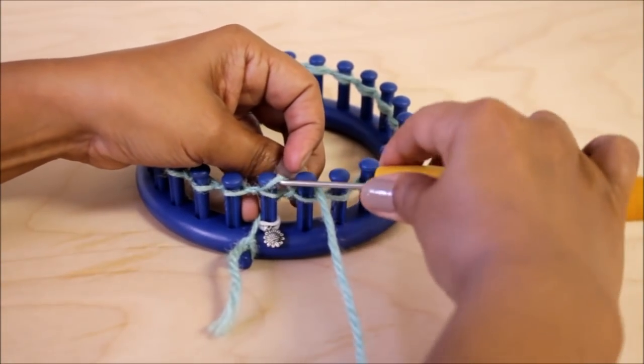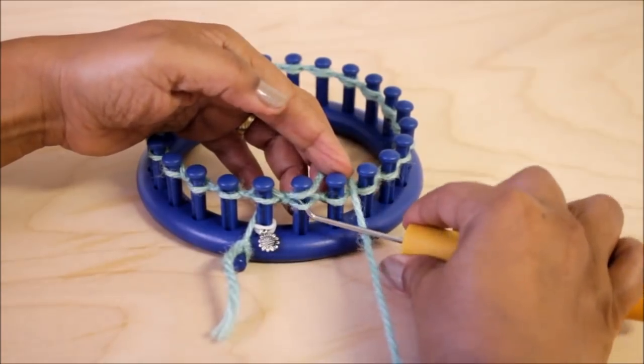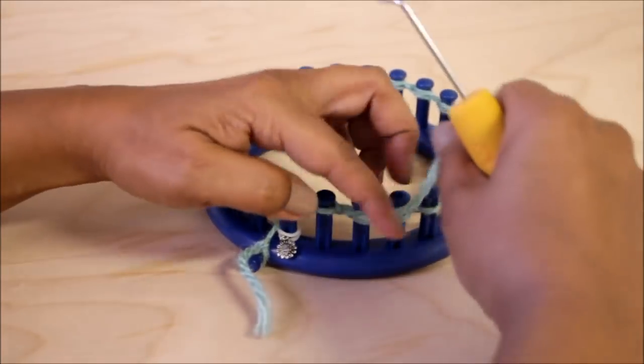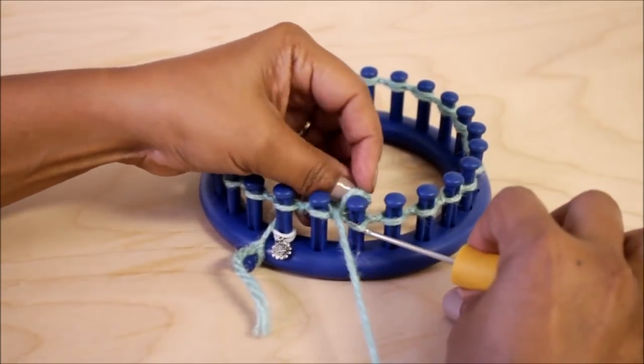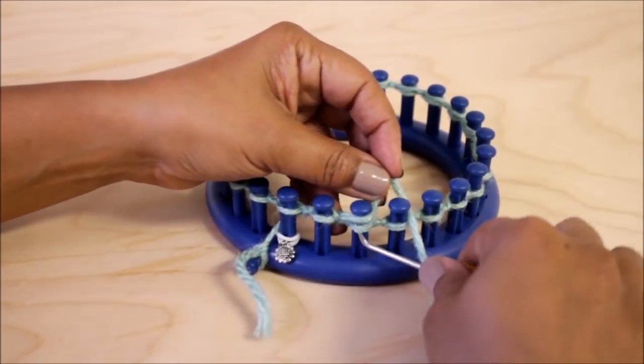Now I need to knit 18 more rows. Remember that we don't count the cast on. That's peg one and I'm gonna continue to go around the loom completely for 18 rows.